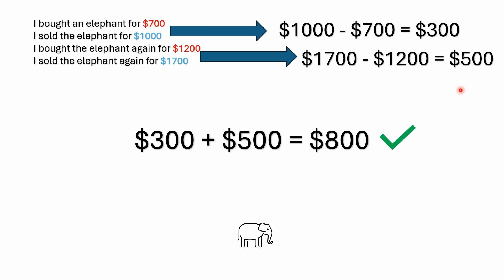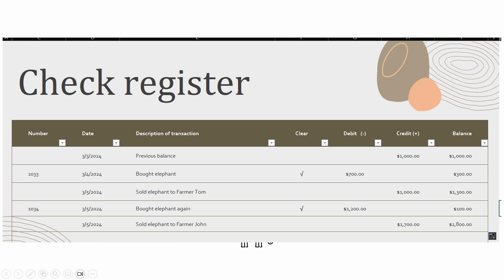Add those two numbers — $300 plus $500 — and you get $800. Very simple. Now, had he bought the elephant for $700 and sold it for $1,700 without the middle transactions, he would have made $1,000. But when he bought the elephant the second time, he had to shell out an extra $200 of his own money. So instead of making $1,000, he only made $800. That $200 is already accounted for in the $800.